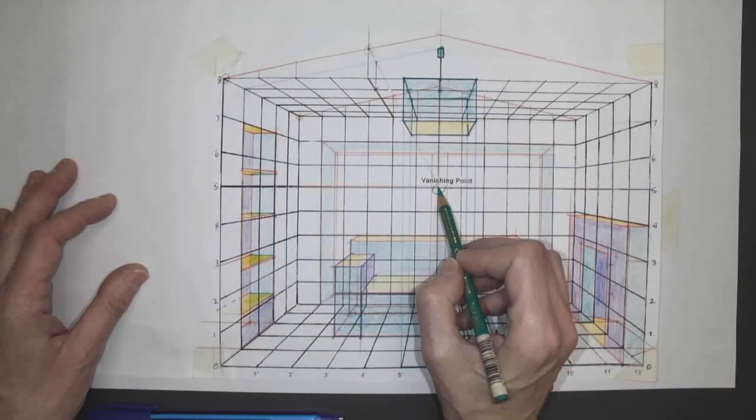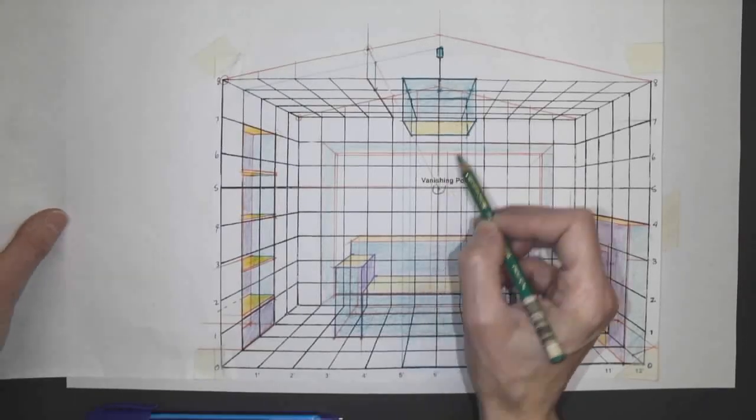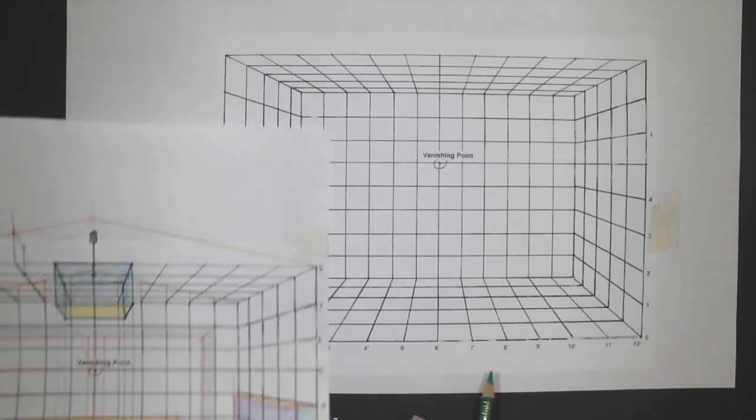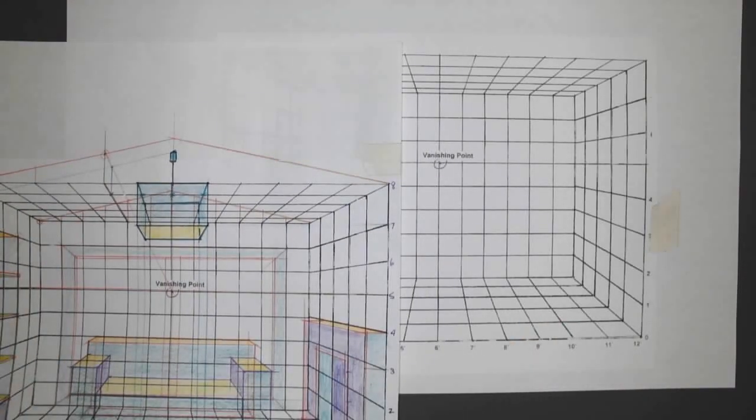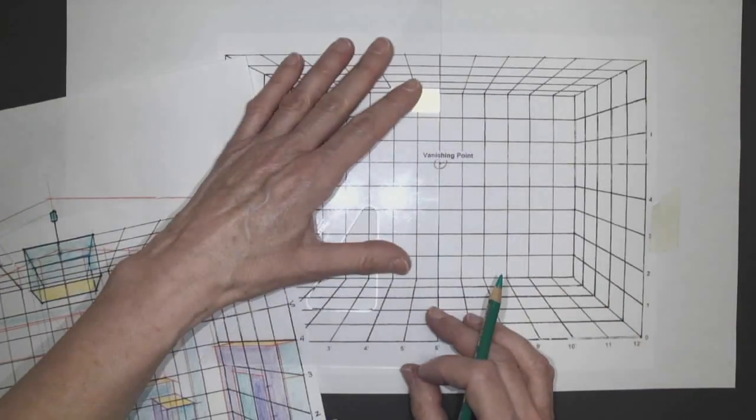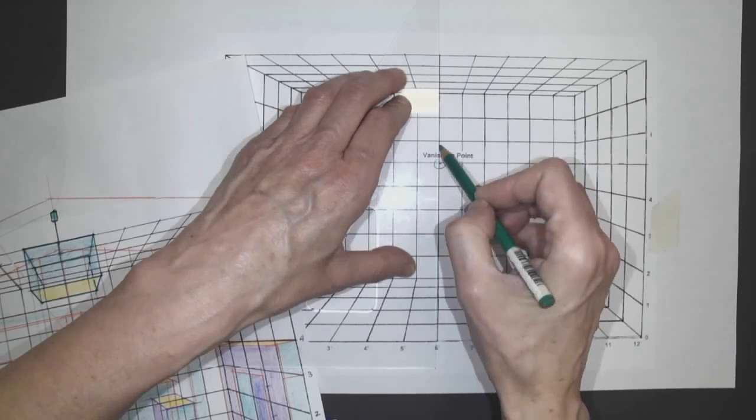So, the vanishing point on our grid is right in the middle. To bring this up, we start there. Okay, so let's bring this up.